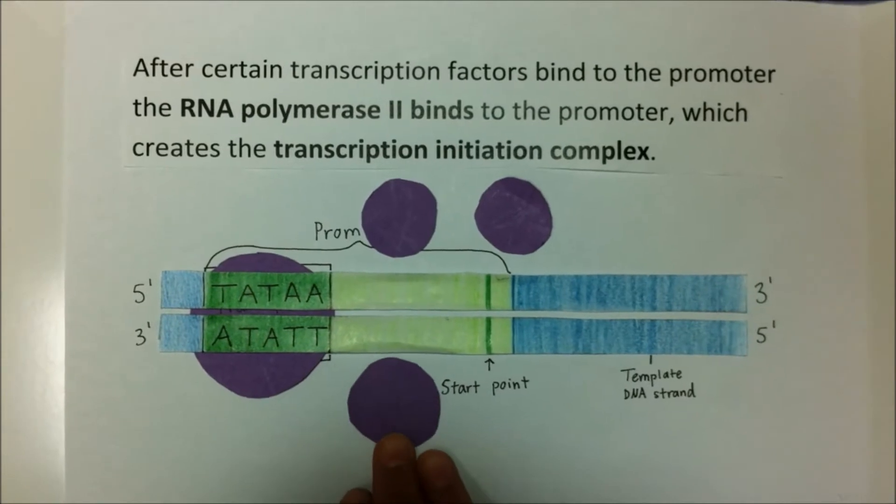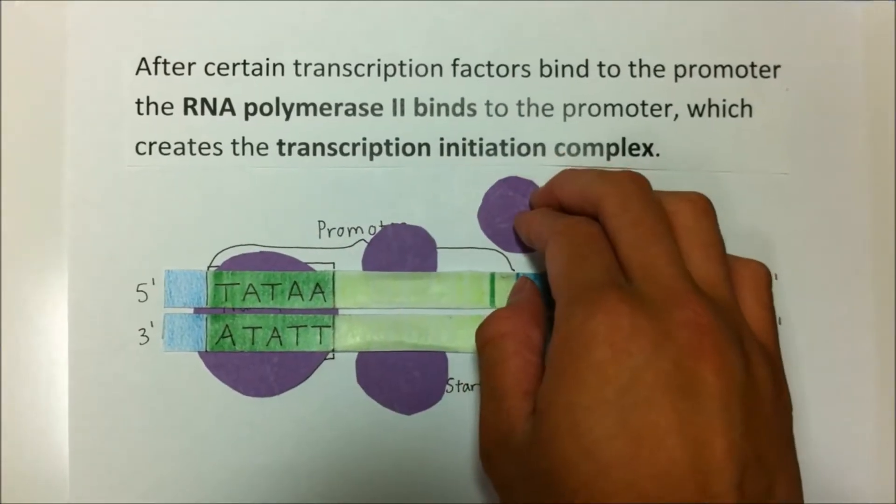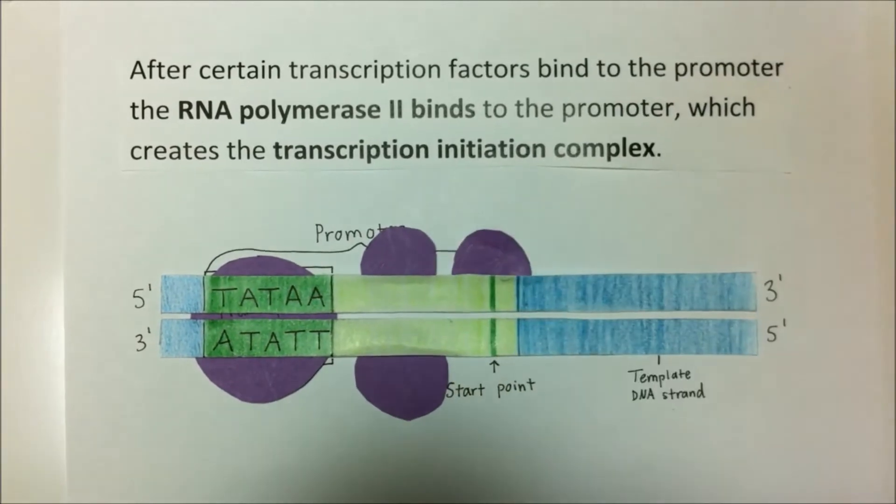After certain transcription factors bind to the promoter, the RNA polymerase II binds to the promoter, which creates the transcription initiation complex.